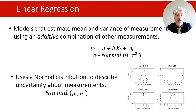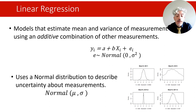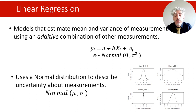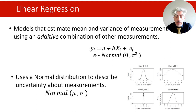Most of you are probably familiar with the normal distribution. It's a bell-shaped symmetrical distribution defined by two parameters: the mean, indicated by the Greek letter mu, and the standard deviation, indicated by the Greek lowercase sigma. The graph on the slide shows different examples of normal distributions that all have the same mean mu equals zero but with different standard deviations, illustrating how the normal distribution changes depending on these parameters.